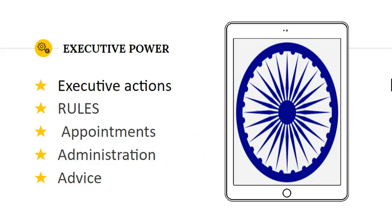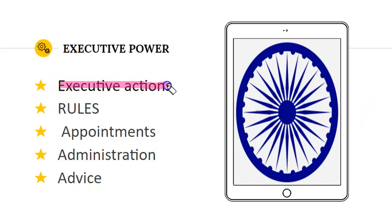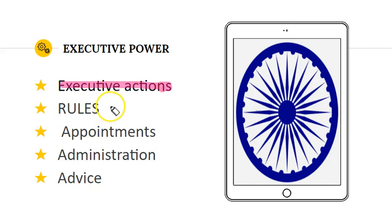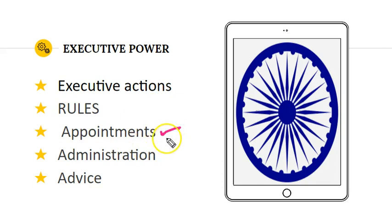The first topic we are going to discuss is the Executive Powers of the President. All the executive actions that the Government of India takes formally take place under the name of the President. Apart from that, the President can specify and make rules regarding the instrument of instructions related to the process so it can be authenticated. The next important point is about the appointment power of the President.